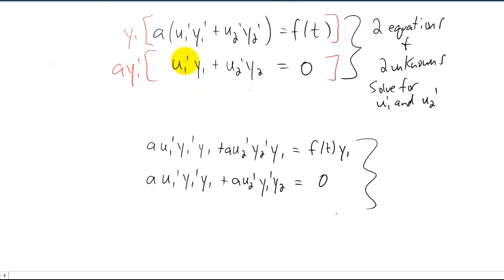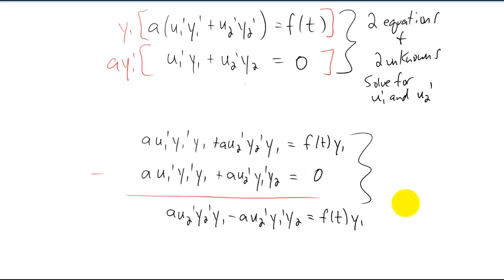Alright, I said I was going to multiply this stuff out, and I did here. Now I'm going to subtract these two equations, and I get something that looks like this because these first two terms cancel out to zero.